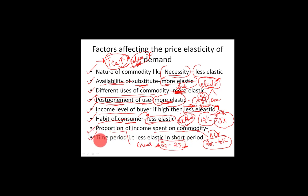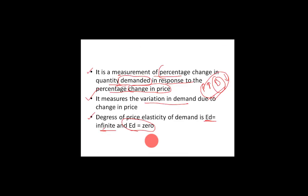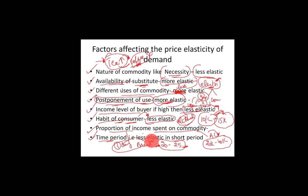Eighth factor is the time period: demand is less elastic for the short period. If you have only 5 minutes to purchase something, you buy quickly without checking price — less elastic. But if you are given one full day, you will compare prices and make a considered decision — so in the short period demand is less elastic, and in the long period demand is more elastic. So questions on substitutes, necessity, and these factors determine whether demand is more or less elastic — just apply conceptual clarity.